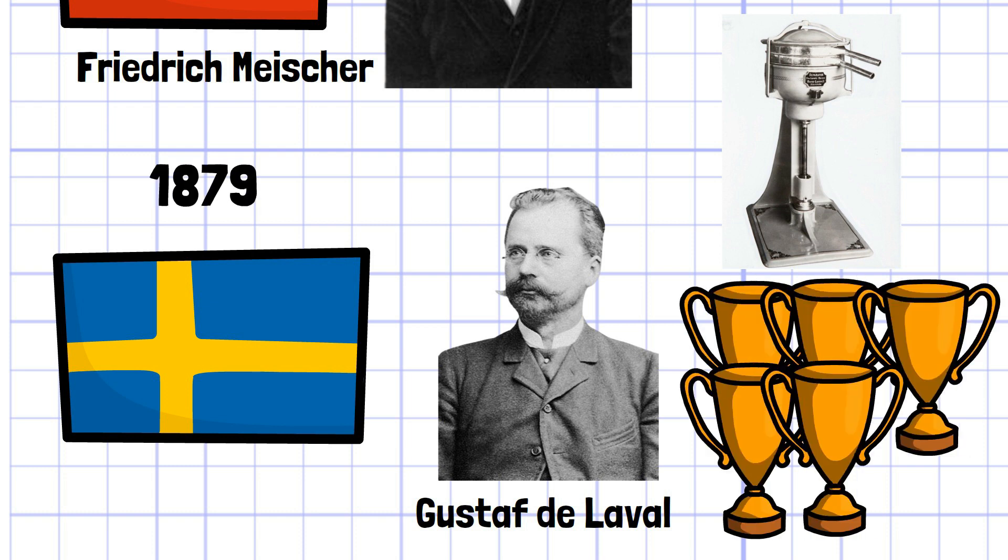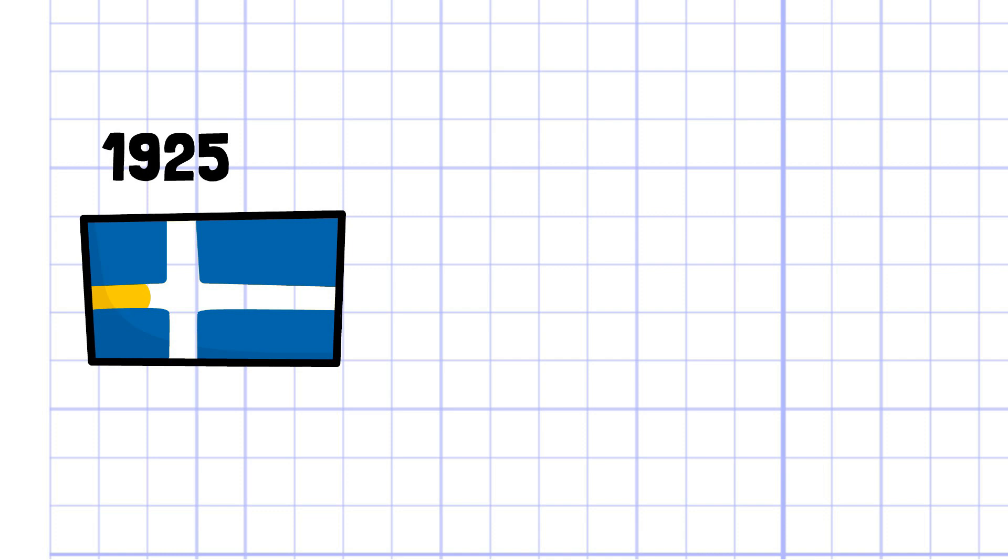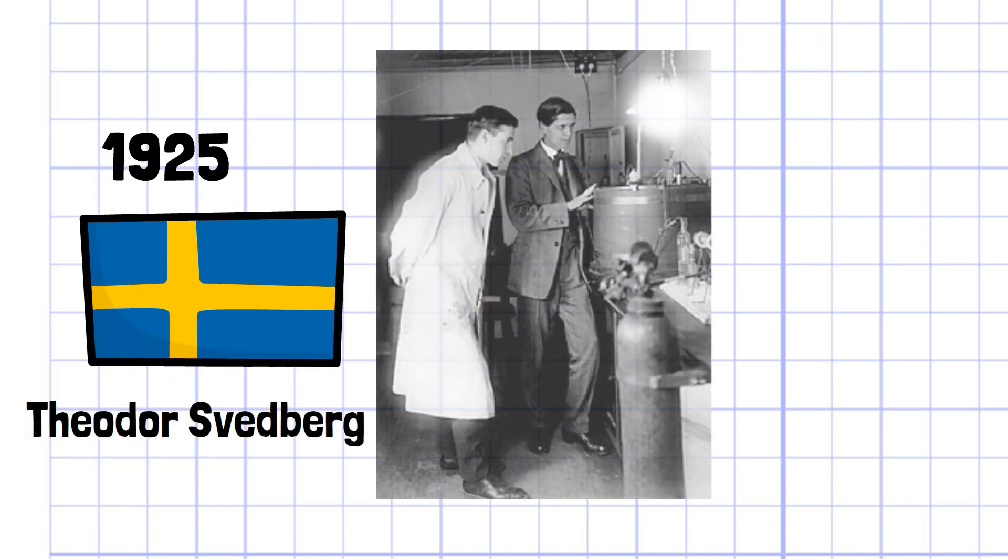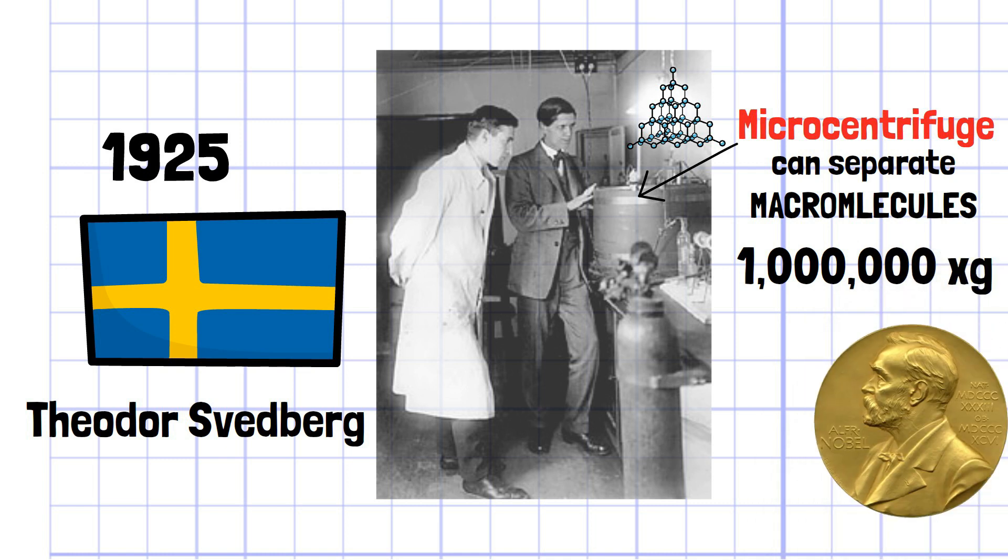The next major invention happened in 1925 from Swedish chemist Theodor Svedberg. He invented a microcentrifuge that allows to separate even macromolecules, which requires very high speed of up to 1 million centrifugal force. He has been awarded the Nobel Prize by this work.